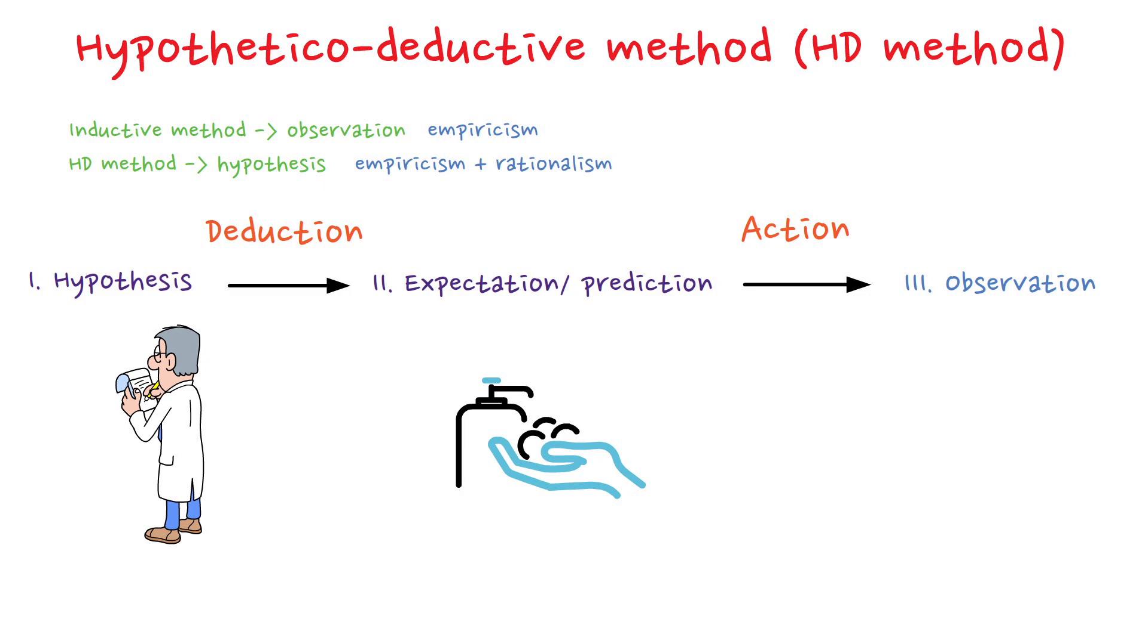This is a textbook application of the hypothetical deductive method. A hypothesis was formulated based on a striking observation. A prediction was deduced logically from the hypothesis. An experiment was conducted and observations were collected to evaluate the outcome.